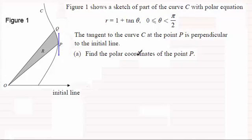And we've now got to find the polar coordinates of this point P. Now what's special about this is because this tangent is perpendicular, then if I was to draw a triangle in here, we'll go straight the way down to the initial line, so that's perpendicular to the initial line.